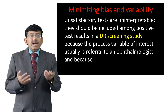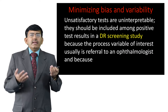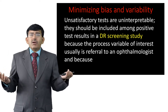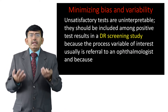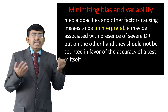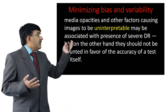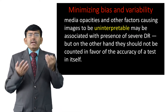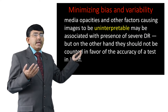This is why a person should be masked from information in medical records and results of the reference test. Unsatisfactory tests are uninterpretable. They should be included among positive test results in a diabetic retinopathy screening study because the process variable of interest is usually referral to an ophthalmologist, and because media opacities and other factors causing images to be uninterpretable may be associated with the presence of severe diabetic retinopathy. However, they should not be counted in favour of the accuracy of the test itself.